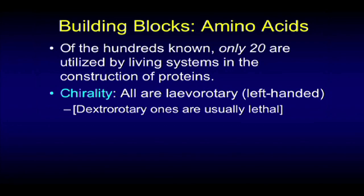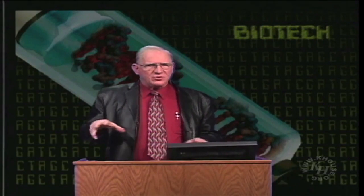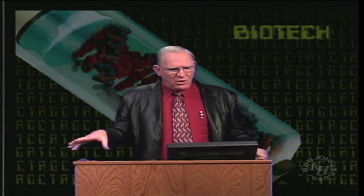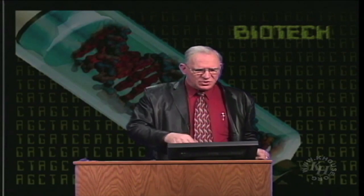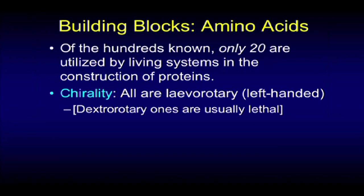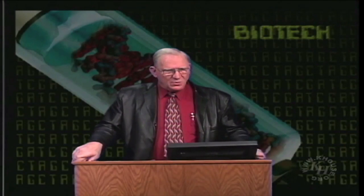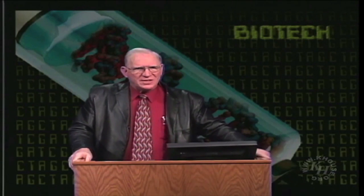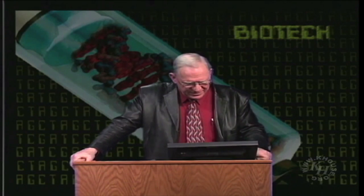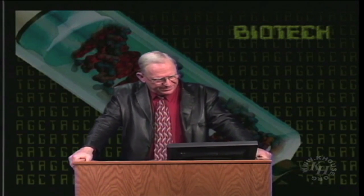Incidentally, only left-handed amino acids are used. If you have an asymmetrical molecule, it can be either left or right-handed. It turns out that all amino acids used in living tissues are left-handed. The right-handed ones are actually lethal. Which tells you it couldn't happen accidentally — because if you have randomness, you'll have half of each, and half of them will destroy the other half. There's something guiding all this.